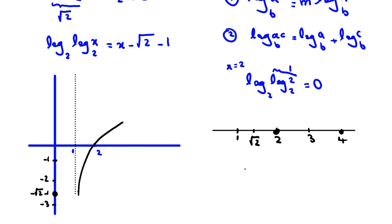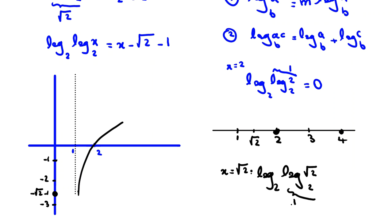So x = root 2 is a solution because the two functions intersect there. We've found one root: root 2. Now we want to find a second root.